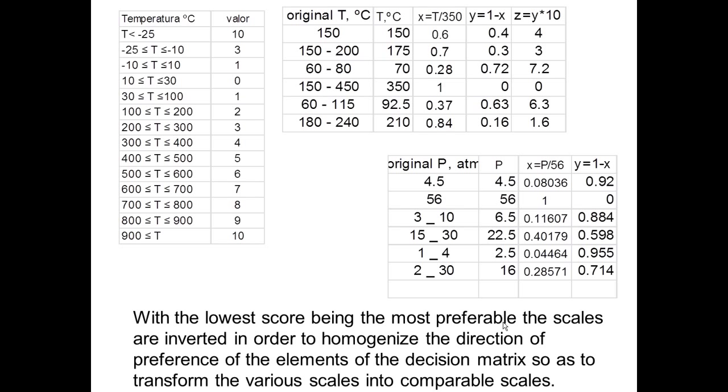When all criteria are benefit or profit criteria, during the normalization procedure, the scores of alternatives are modified to be comparable, and thus a normalized performance matrix is obtained. With the lowest score being the most preferred for this case, the scales are inverted in order to homogenize the direction of preference of the elements of the decision matrix, so as to transform the various scales into comparable scales.